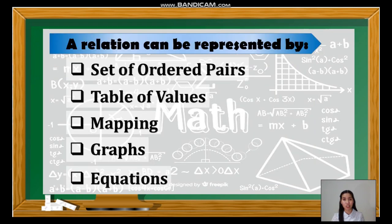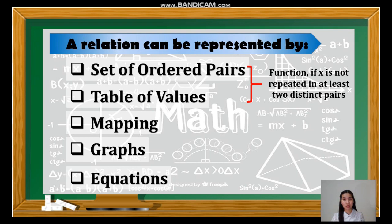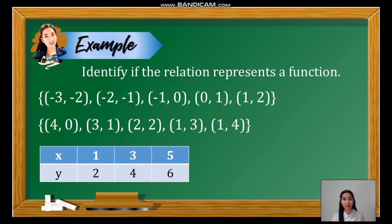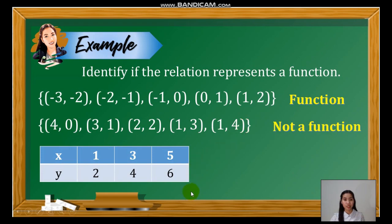There are several ways to represent a relation. It can be using set of ordered pairs, table of values, mapping, graphs, and equations. For the first two, they are considered a function if x is not repeated in at least two distinct pairs. Looking at the first given relation, x is not repeated. Therefore, this relation is considered a function. How about the second one? Here we have a value that is repeated, and that is 1. Since 1 is repeated as an x value, then this relation is not a function. For this table of values, it is very obvious that no x value is repeated. Thus, we can conclude that this is a function.